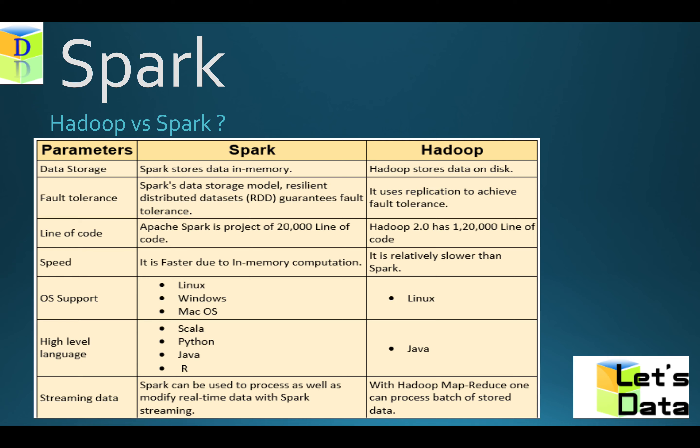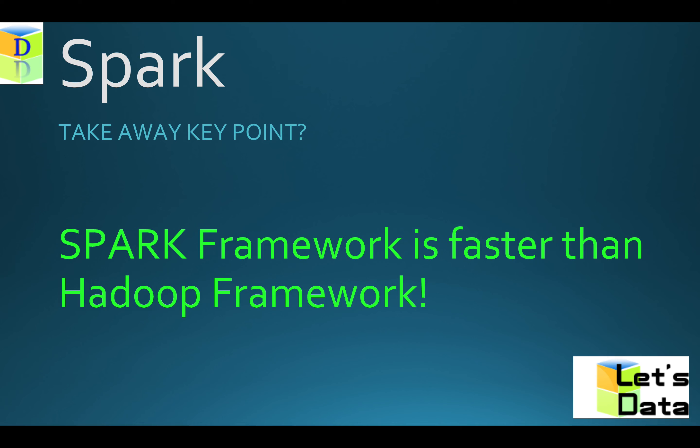Speed fast ho jati obviously because of in-memory computation. OS support achcha hai, not only Linux but other OS as well. High level languages ko support karta hai jo ke hamne dekhe. Streaming data: Spark can support batch as well as streaming, whereas Hadoop only supports batch processing. So the takeaway is Spark framework is faster than Hadoop framework. Thank you for watching this video!